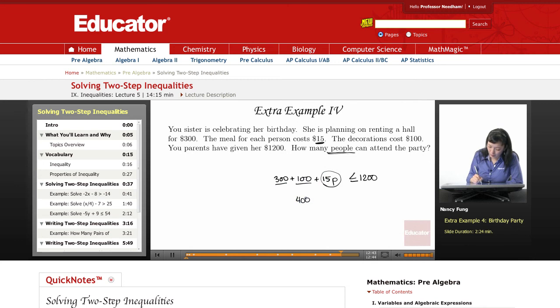$300 plus $100 is $400. That's the flat amount that she has to pay just to get the hall and decorate it. Let's take out the $400. Once we take out the $400, everything left over is going to be spent on the meals.